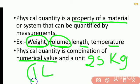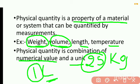The numerical value here is 1 and in this case 25, like that: 1, 2, 3 are numerical values. Physical quantity is also a combination of unit. The unit here is liter in this case and kg in this case.